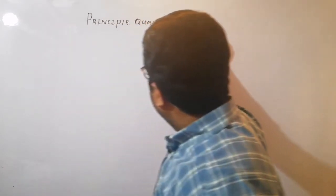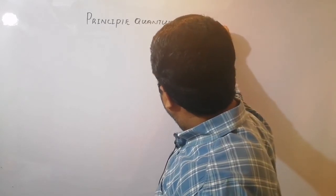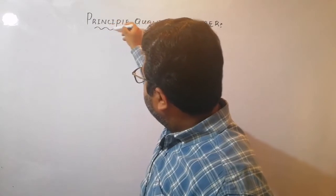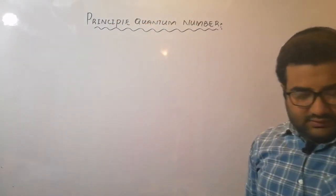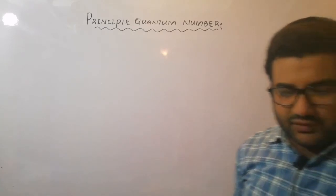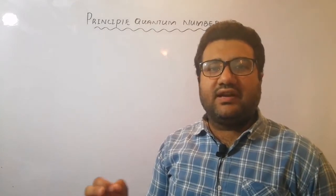Principle quantum number. Why is it called the principle quantum number? Because this is the quantum number that is going to decide the values of the next two quantum numbers.